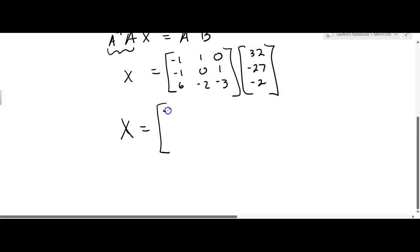...equals negative 32 minus 27 plus 0. So I'm multiplying this row times this column. Okay, now I'm going to multiply this row times this column, and I'm going to get negative 32 plus 0 minus 2.